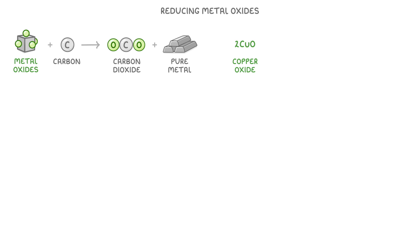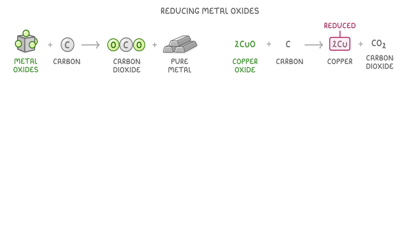For example, copper oxide plus carbon reacts to form copper plus carbon dioxide. So we would say that the copper was reduced, because it lost oxygen, and the carbon was oxidised, because it gained oxygen.